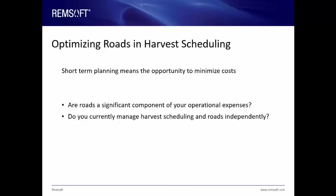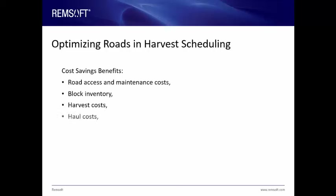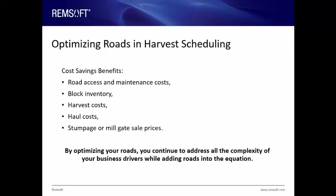Remsoft enables connected decision-making to coordinate road planning with harvest scheduling. While planning your harvest units, you can account for several factors, such as road access and maintenance costs, block inventory, harvest costs, haul costs, and stumpage or mill gate sale prices. So you continue to address all of the complexity of your business drivers, but add roads into the equation.